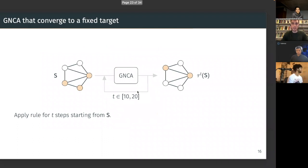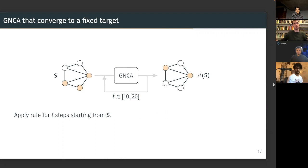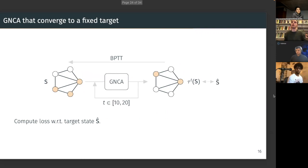We want to morph our point cloud into something we control, but we don't know the rule that does this — that's what we want to find. We can't approximate one-step transitions here. Instead, we train the GNCA as a sort of recurrent neural network: you start from an initial state, let the model evolve autonomously on its own outputs for T time steps — sampled between 10 and 20 — and then use backpropagation through time with respect to the target state, computing the loss exactly as a recurrent neural network.